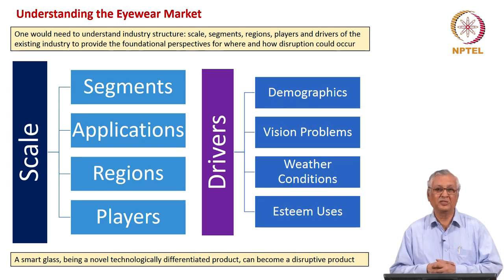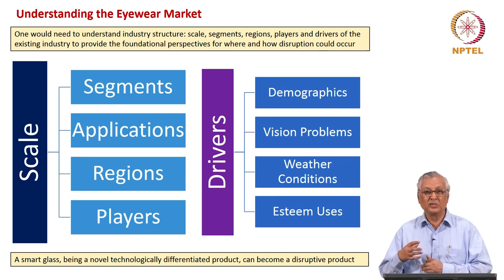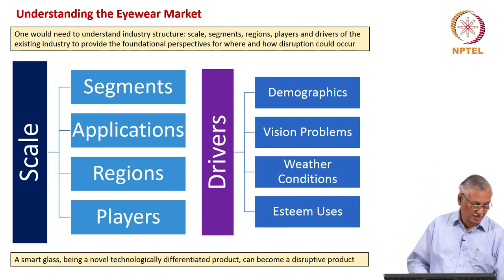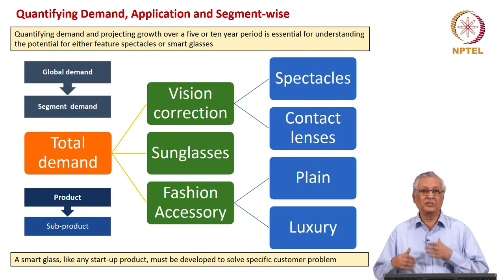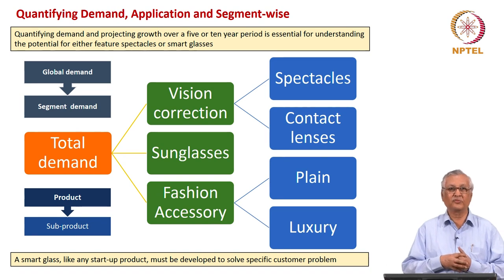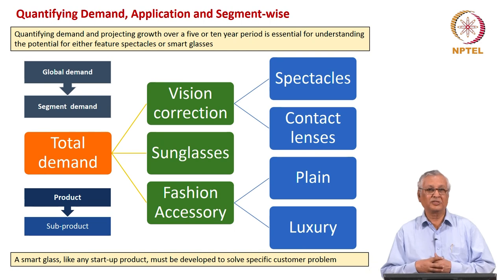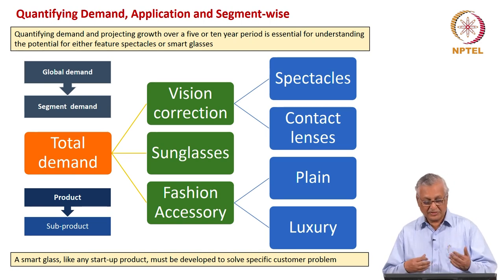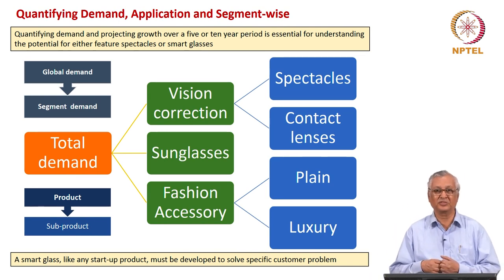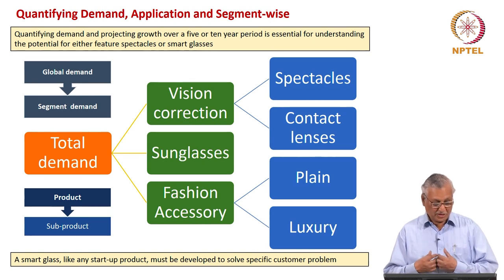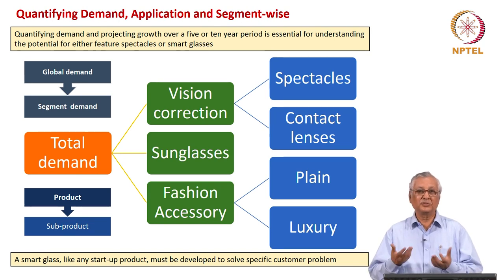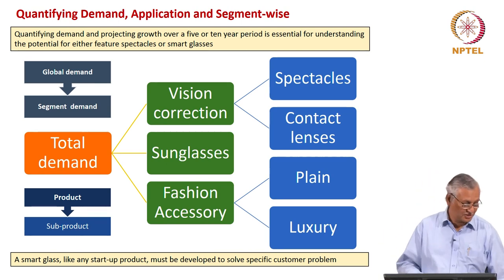When we say that smart eyewear could be a disruptive product, the business strategist has to analyze the existing market structure and see where this product could disrupt and how to accomplish that disruption. In any industry there are two areas to understand demand — total demand as an agglomeration from various regions, and also as an agglomeration of demand for products and sub-products. In spectacles we have: vision correction subdivided into spectacles and contact lenses, sunglasses, and fashion accessories both plain and luxury. However, a smart glass must be developed to solve a specific customer problem — in which case, which segment would it substitute and how? To be able to answer this, the strategist must understand the underlying technology in a much more perceptive way than just putting numbers to a business plan.